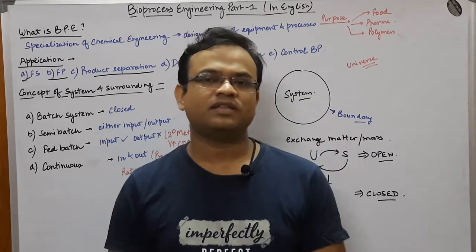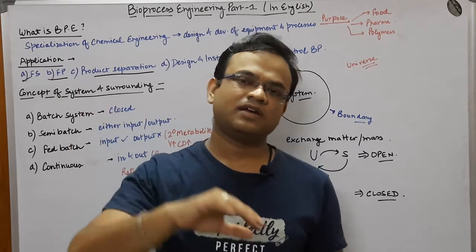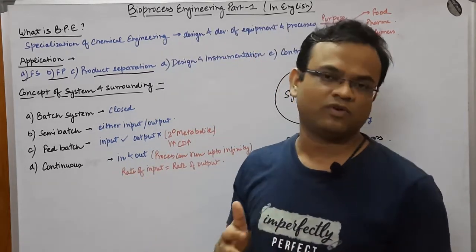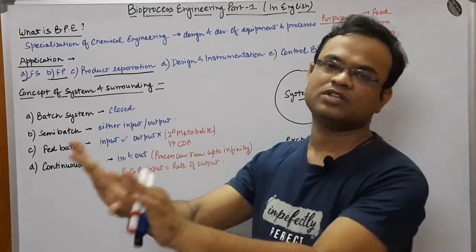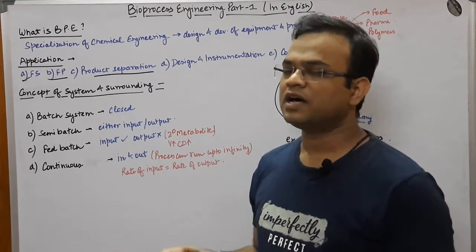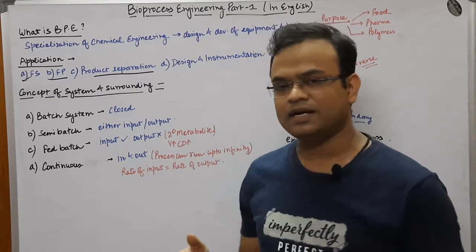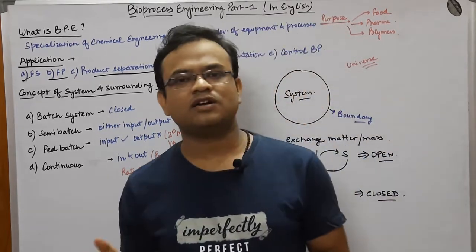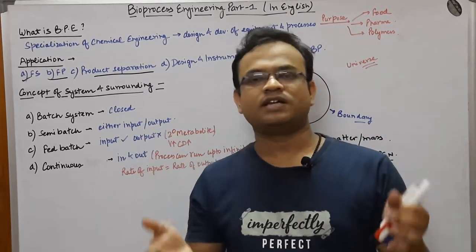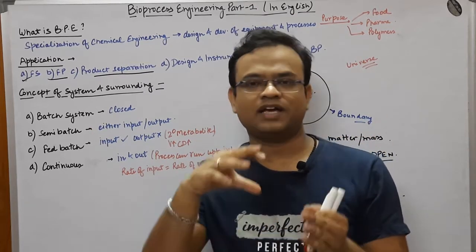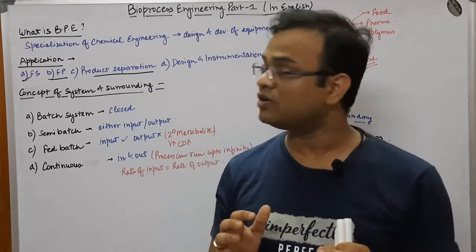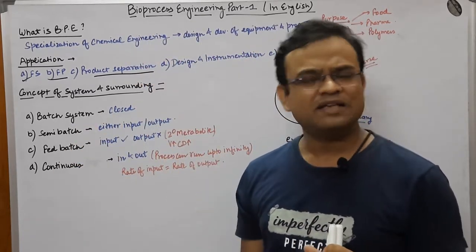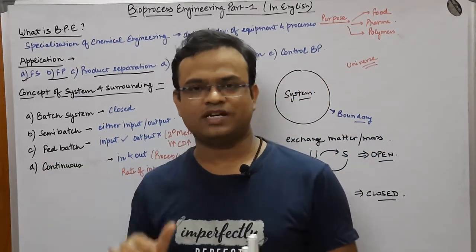In a batch system, you have a fermenter or a bottle, you put in your material, your medium, and your inoculum, then you close the lid and keep it for the desired period — say one month. You do not touch it during that period. After the period is complete, you come back and work with the product. It is called a closed system because you dump everything inside, close it, and do not open it until the experiment is done.